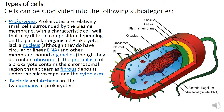Prokaryotes have circular DNA and other membrane-bound organelles are absent, though they do contain ribosomes. The protoplasm of prokaryotes contains the chromosomal region that appears as fibrous deposits under the microscope, as well as cytoplasm. Bacteria and archaea are the two domains of prokaryotes.